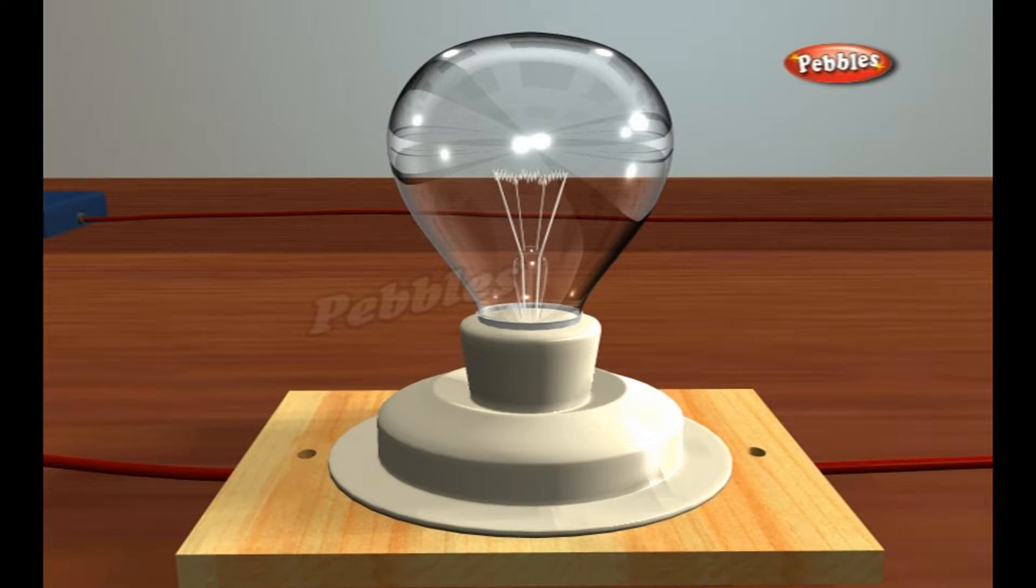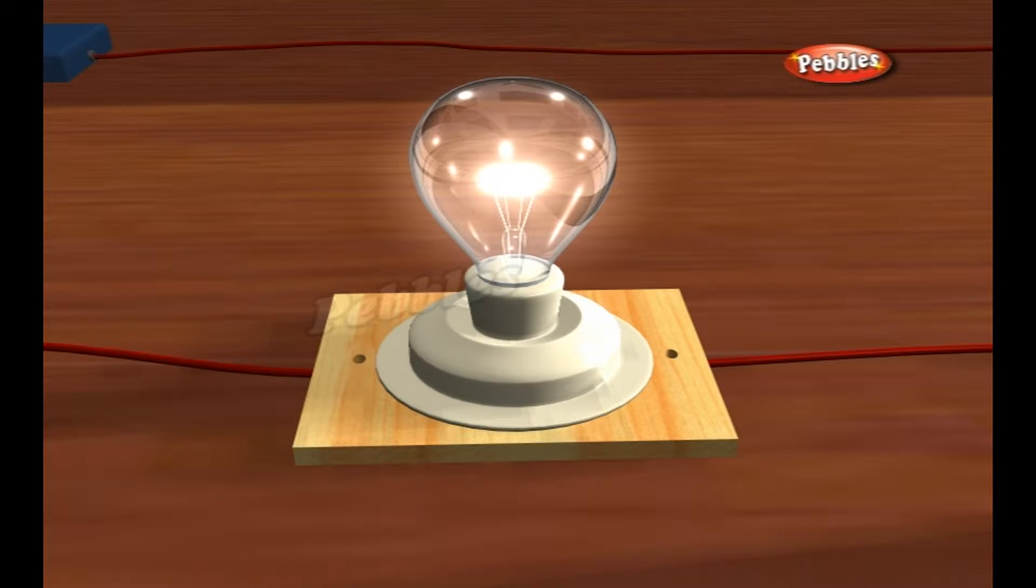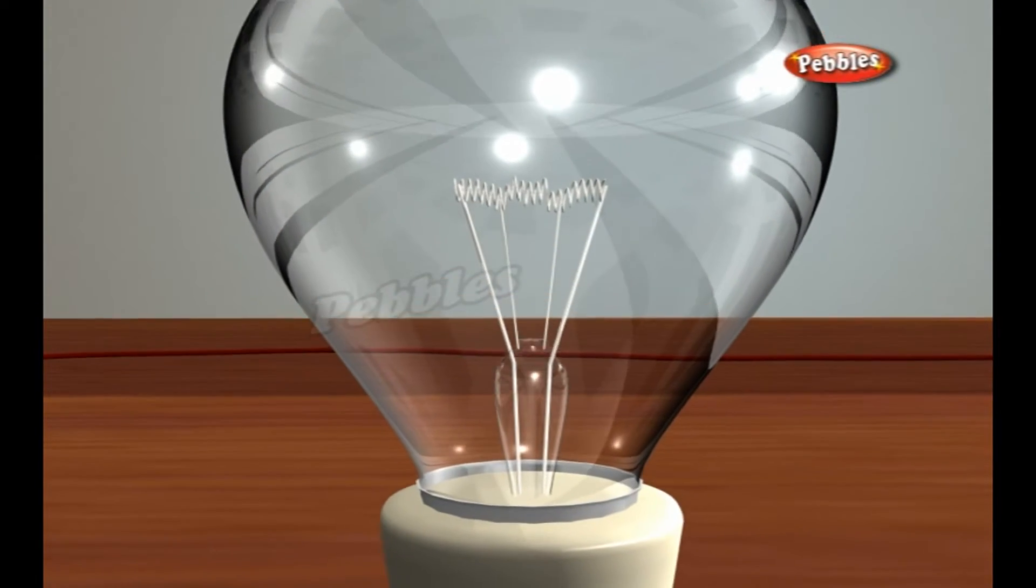When the bulb is hooked up to a power supply, an electric current flows from one contact to the other through the wires and the tungsten filament. The tungsten is very thin and coiled to maximize resistance in the wire.